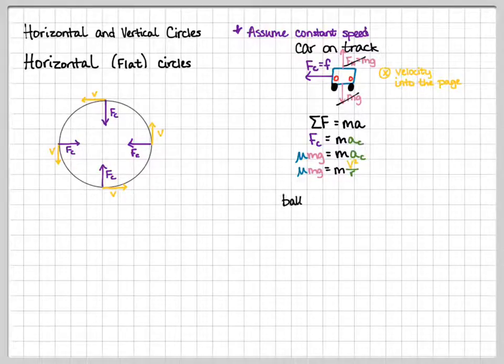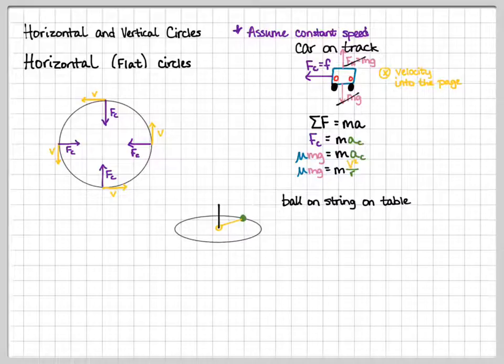We will do one more example. Let's talk about a ball on a string on a table. The setup is something like there is a bar in the middle of the table and there is a loop of string tied around it and the ball is just spinning around this bar. When we draw our free body diagram, this is also going counterclockwise, and we're looking at the rightmost point again.